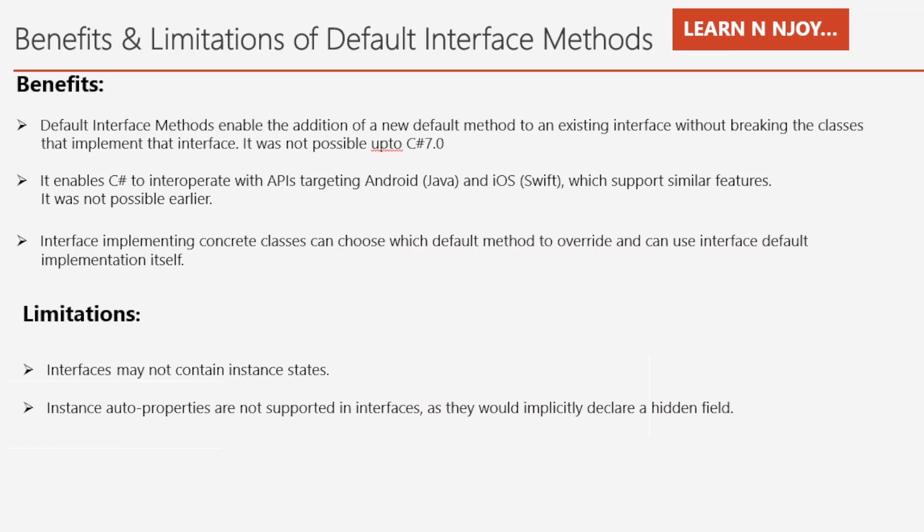The benefits of default interface methods: number one, they enable adding a new default method to an existing interface without breaking implementing classes — not possible up to C# 7.0. Number two, they enable C# to interoperate with APIs targeting Android and iOS, which support a similar feature. Number three, implementing classes can choose which default method to override, or use the interface's default implementation itself.